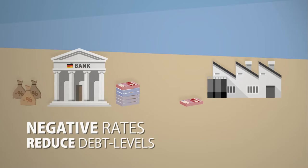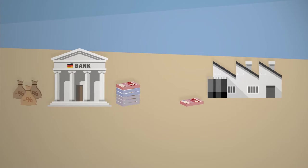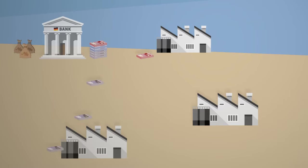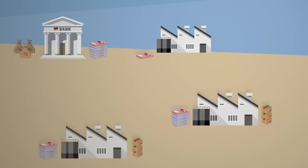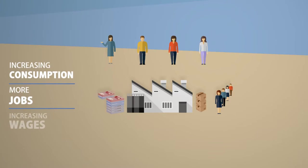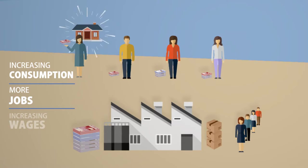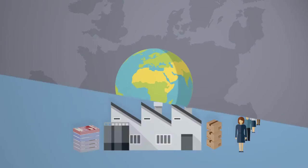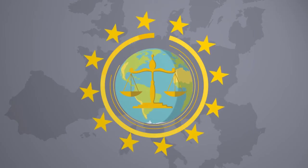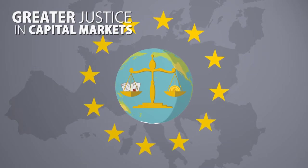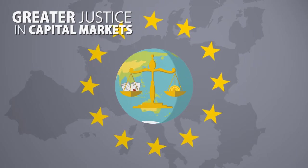Borrowing money under negative rates is highly attractive, hence all businesses and households further invest and consume. The higher amount of credit and mortgages could help facilitate the supply of goods and increase demand, as well as kickstart the economy. The higher production output might create more jobs and higher wages. Consequently, this may stabilize the economy and enhance competitiveness. Capital is now redistributed to the businesses and households that are in need of liquidity, creating both new supply and demand.